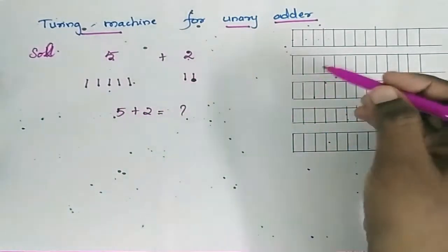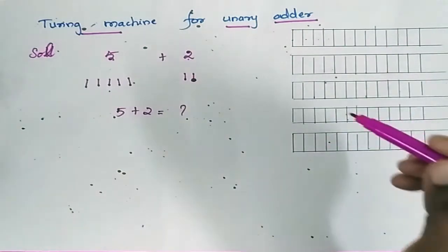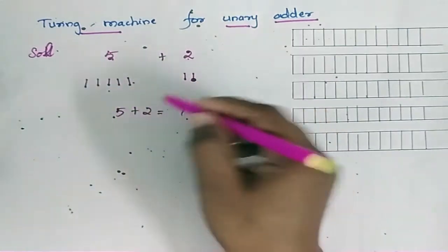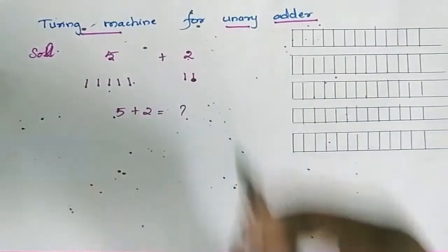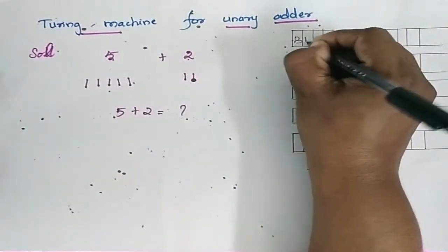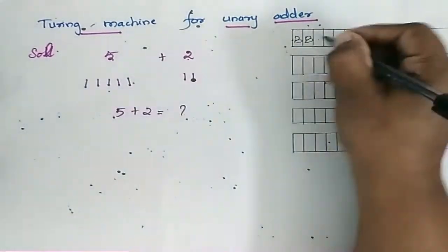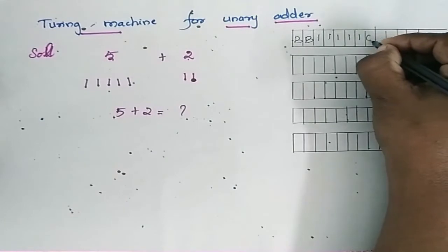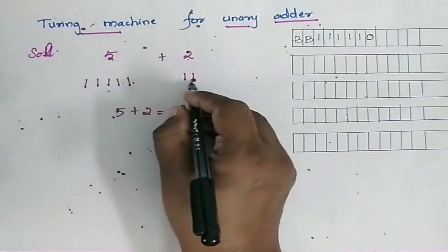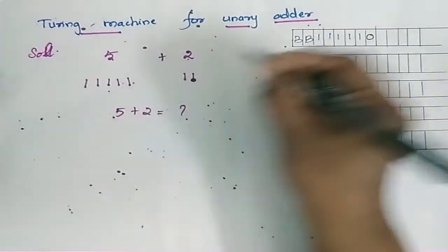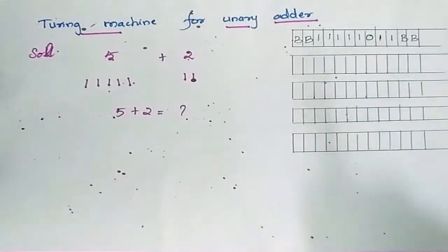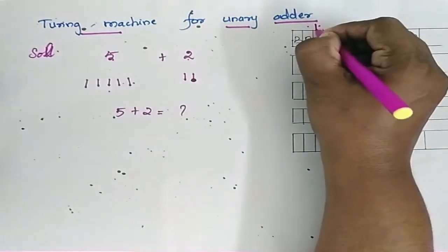We will use a Turing machine to add these numbers. On the tape, we have blank spaces followed by the unary representation of 5, then a delimiter (0) separating the two numbers, then the second number — 1, 2 — followed by the remaining blank spaces. The tape head starts here.